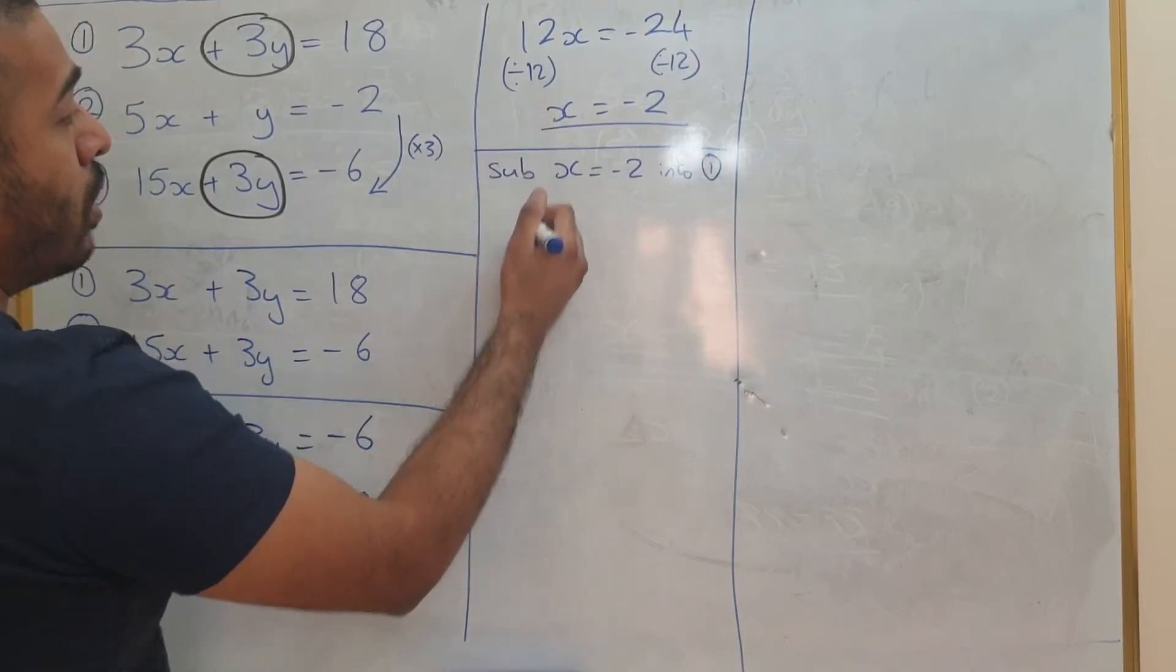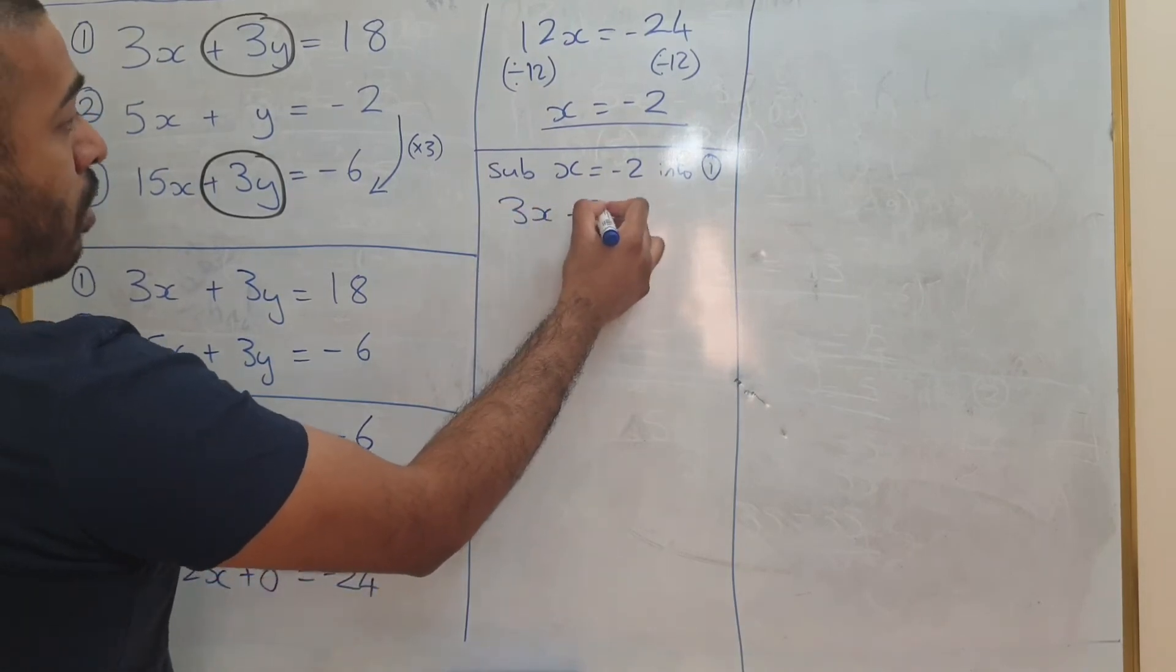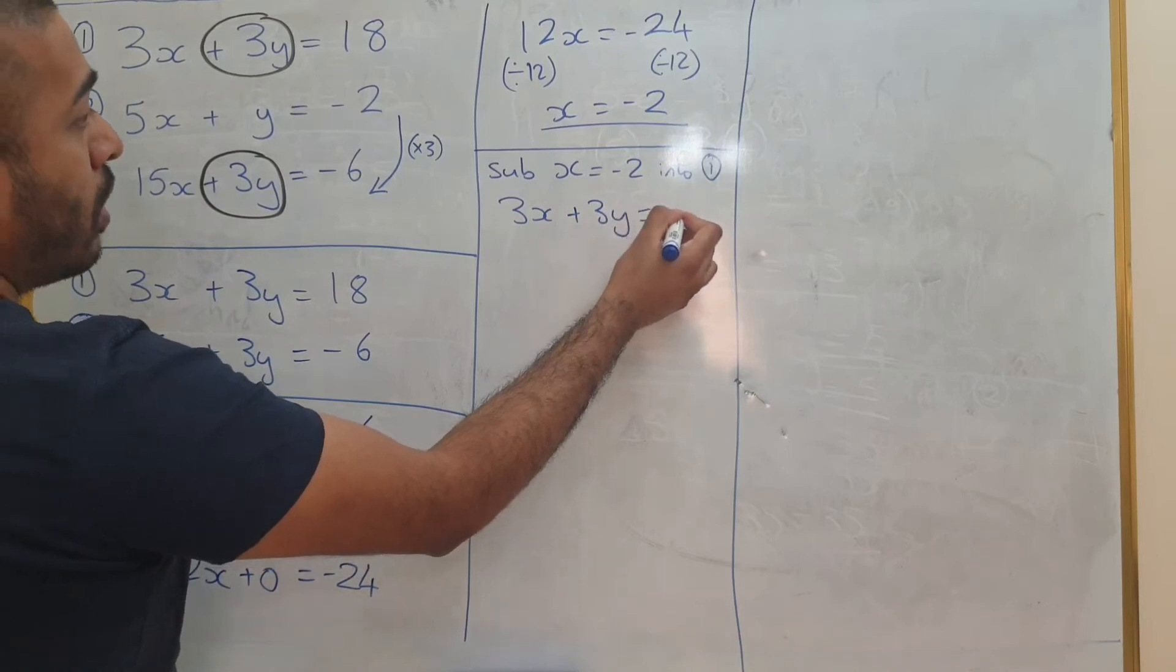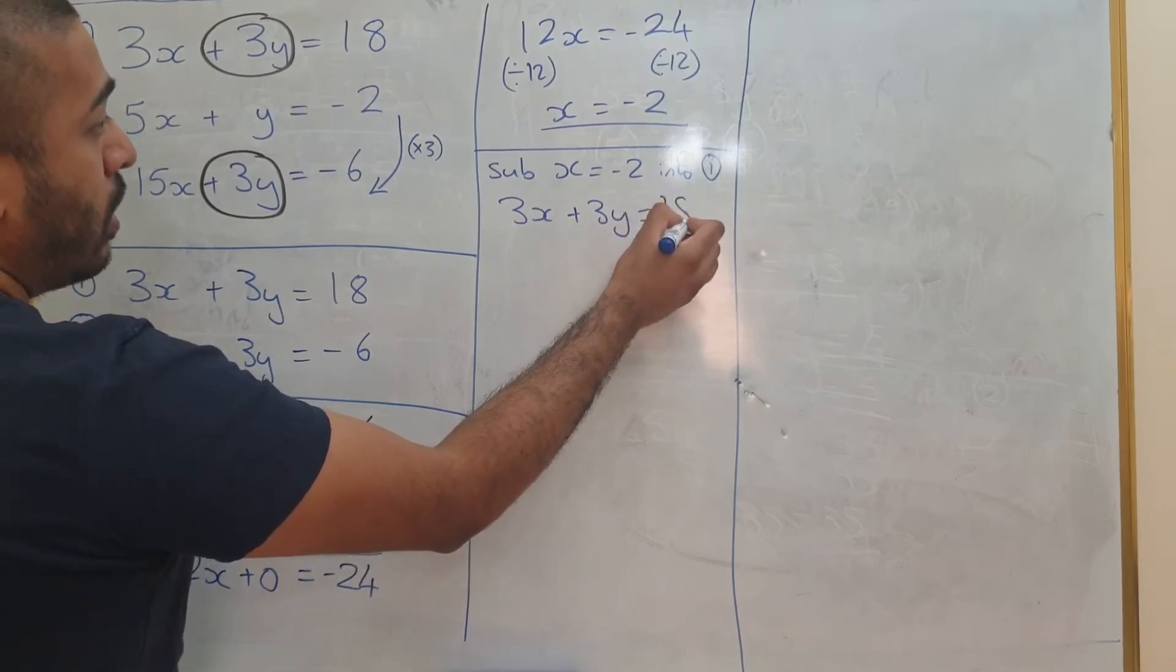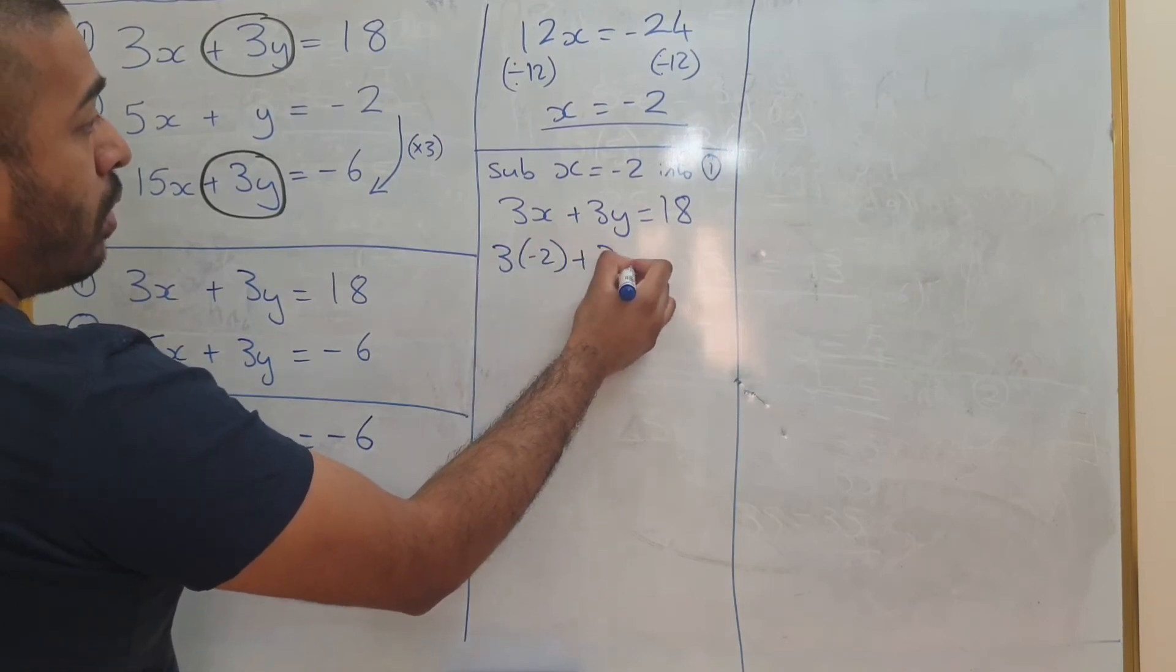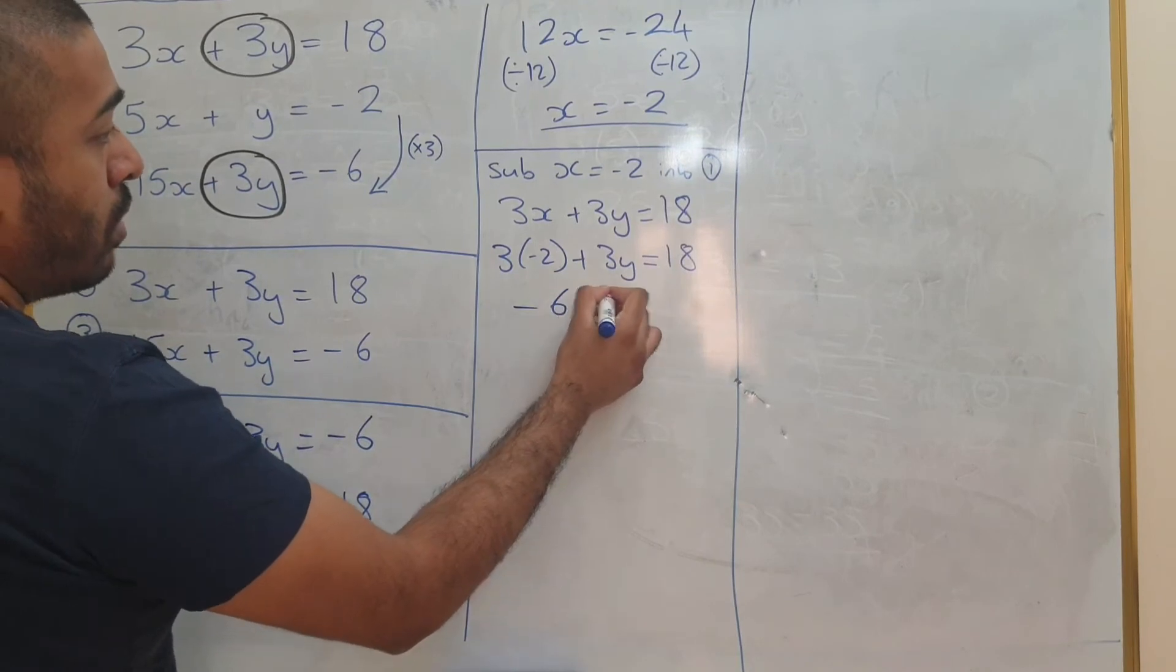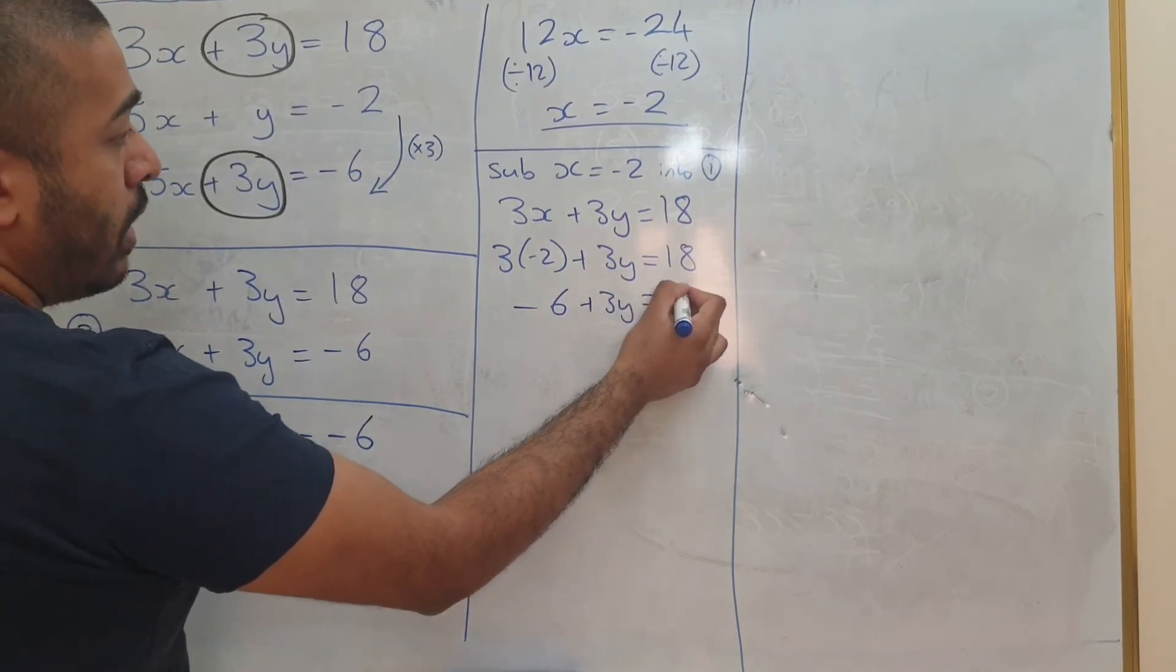So it's going to be 3x plus 3y equals 18. I'm going to have 3 times minus 2 plus 3y equals 18. So minus 6 plus 3y equals 18. Add 6 to both sides.